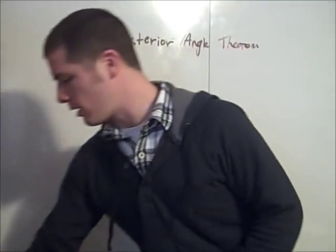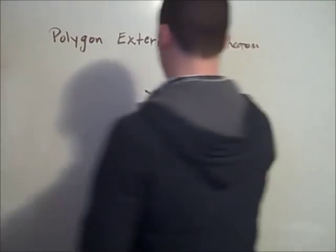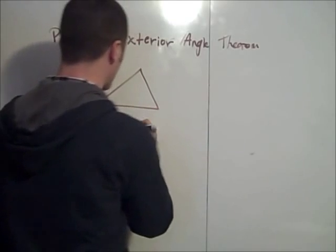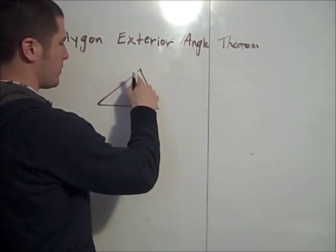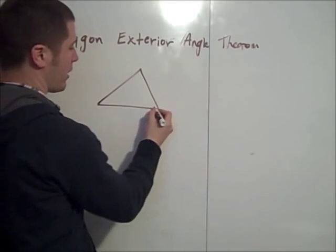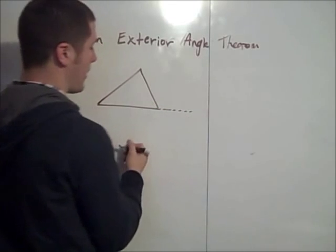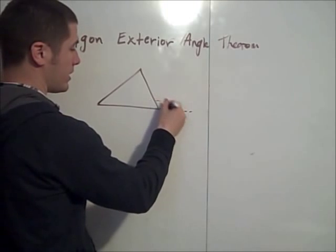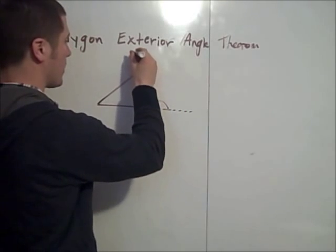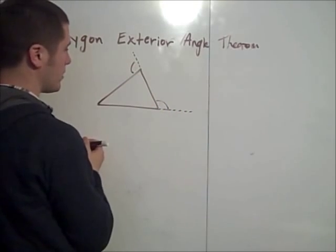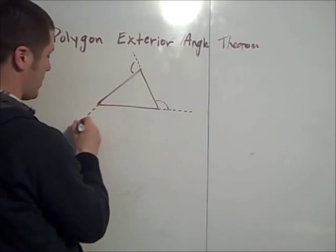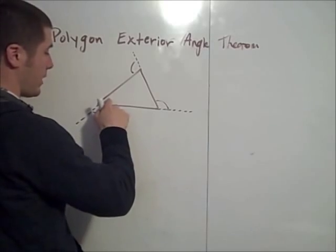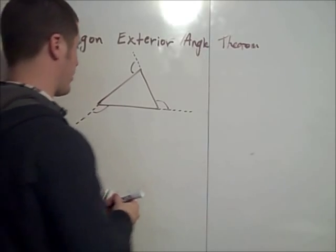First we have to decide what an exterior angle is. If we look at just a triangle — a triangle has three interior angles, and an exterior angle of a triangle is an angle that makes a linear pair with an interior angle. So an exterior angle makes a linear pair with an interior angle.